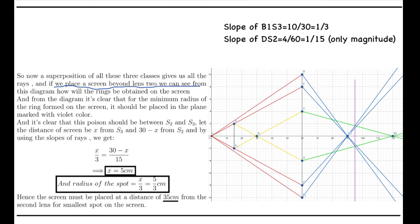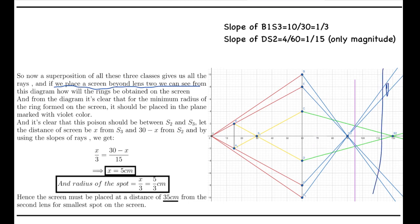From the diagram it is clear that the minimum radius of the spot on the screen corresponds to the plane marked in violet. For example, placing the screen at various positions shows the light forming rings of different radii. The radius decreases along the green ray, reaches a minimum at a specific point between S3 and S2, and then increases continuously thereafter. So the screen should be placed at that minimum point.